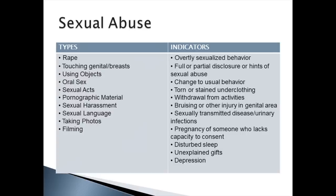Sexual abuse. Types of sexual abuse can include rape, the touching of genitals or breasts, using objects against people, oral sex, sexual acts, pornographic material, sexual harassment, sexual language, the taking of photographs, and filming people. Indicators might include overtly sexualised behaviour, full or partial disclosure, or hints of sexual abuse.